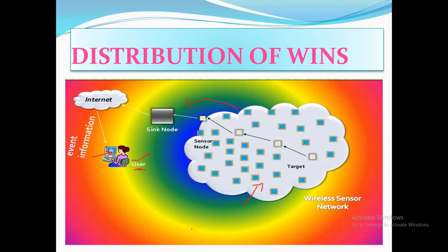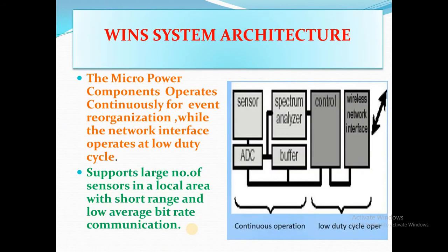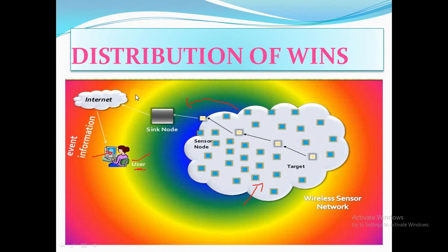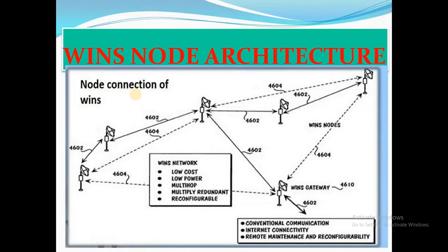That is the simple working principle of WINS. The architecture mainly consists of: a sensor, an ADC (Analog to Digital Converter), a spectrum analyzer, buffer, controller, and a wireless network interface. It is useful for continuous operation and low duty cycle operation, and it supports a large number of sensors in a local area with short range and low average bit-rate communication.